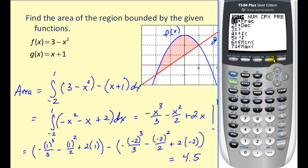If we hit math and then select option nine, we can type in our original integrand negative x squared minus x plus two comma x comma negative two comma one just to check our work, and that verifies that we did it correctly.